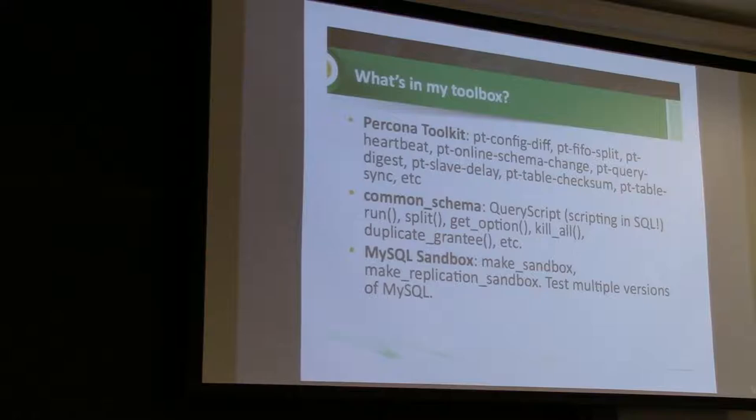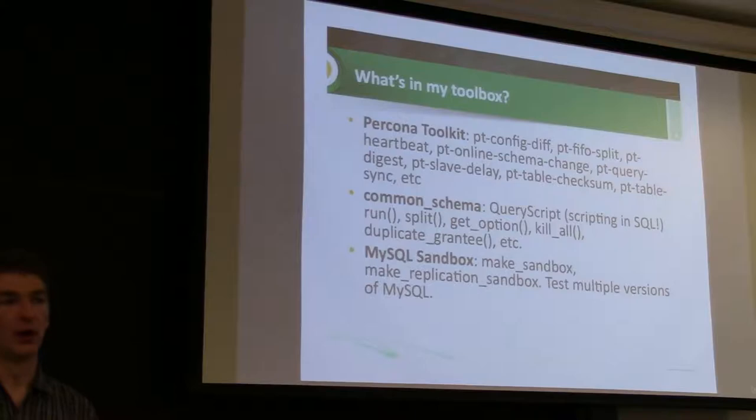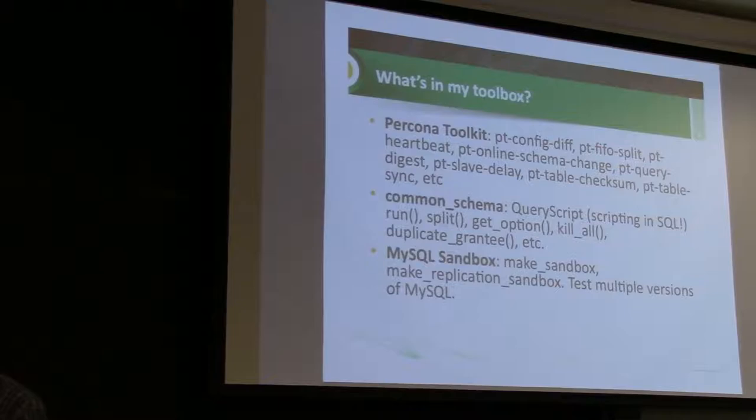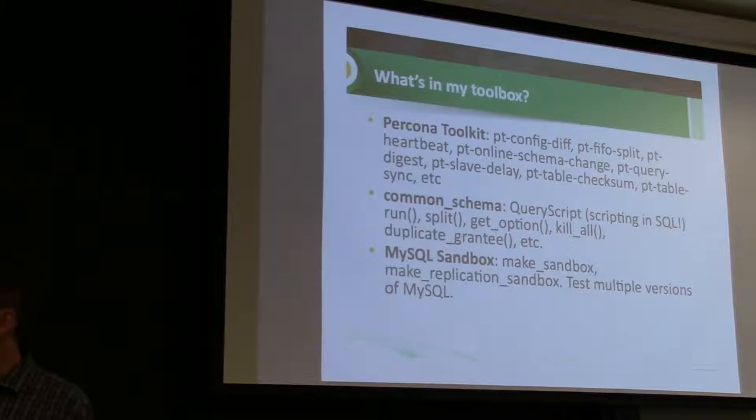You can use kill_all — if you have a lot of processes running and causing problems in your database and want to kill all processes for a certain user or on a certain table, you can do that. duplicate_grantee is a nice shortcut: if you have a user account set up with certain privileges and want to make a copy of that user account, you can just run duplicate_grantee and it will make a new user with exactly the same privileges.